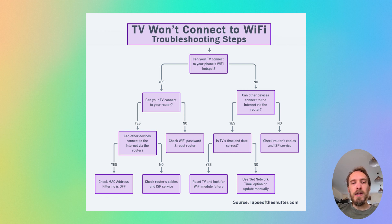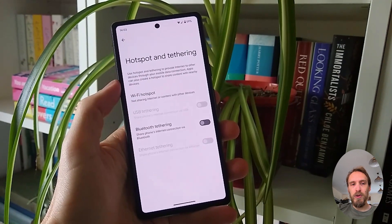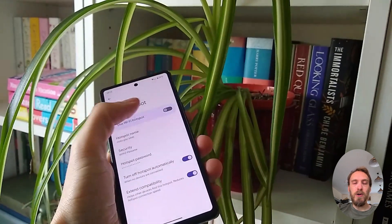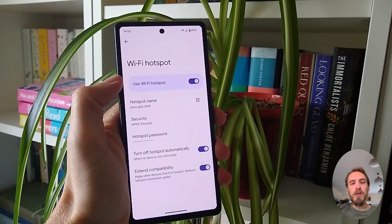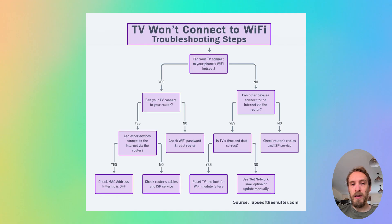If your TV connects to your phone hotspot and can access the internet through your phone — assuming you've got mobile data switched on — then you can assume the problem is with your router and not your TV. If your TV will not connect to your phone hotspot, then you either have a software issue with your TV or a hardware problem with the Wi-Fi card in your TV.